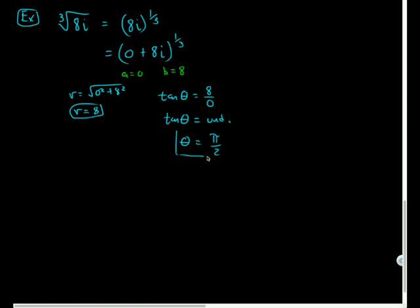Tangent is undefined at π/2. So here's kind of a sneaky, tricky problem they're giving us here, but that's okay. So the polar form of this point would be 8(cos(π/2) + i sin(π/2)).